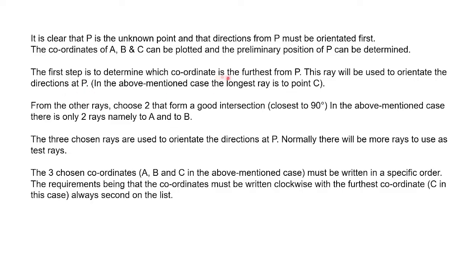The first step is to determine which coordinate is furthest from P. In this case it's going to be C. Then you say that choose two, from the other rays choose two that form a good intersection closest to 90. In this case only A and B, the two rays, so we're going to use those two since they're the only two.